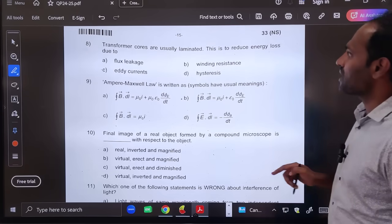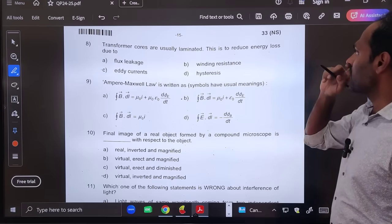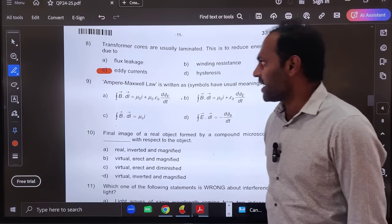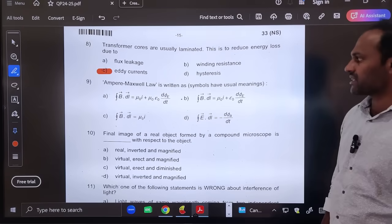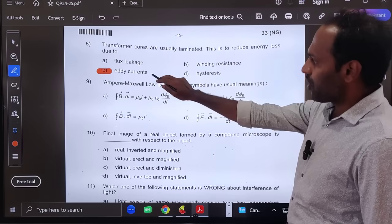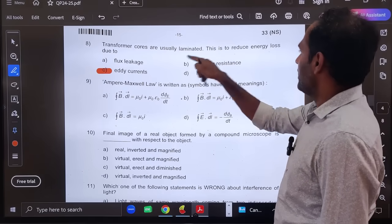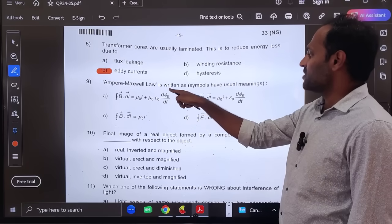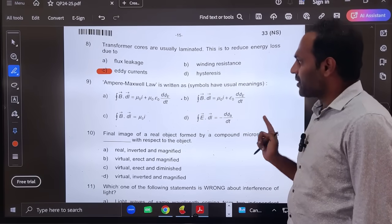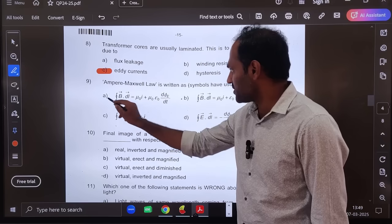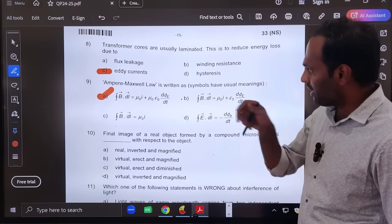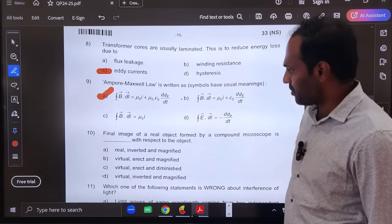Eighth question: Transformer cores are usually laminated. This is to reduce energy loss due to eddy currents. Energy loss due to eddy currents, option C is correct. Ampere-Maxwell's law is written as Ampere-Maxwell's law. So direct standard question. So it is option A, conduction current plus displacement current.